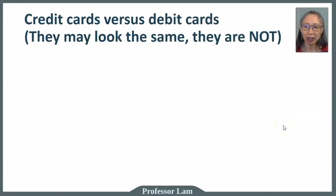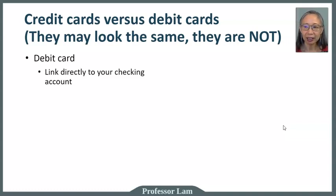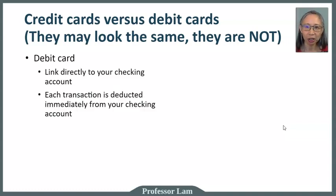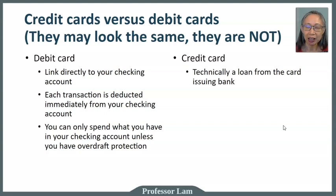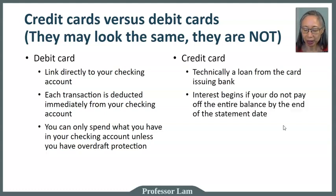Credit cards and debit cards may look the same, but they are very different. A debit card is linked directly to your checking account, and each transaction from a debit card is deducted immediately from your checking account. You can only spend what you have in your account unless you have overdraft protection. For a credit card, it is actually a loan from the card issuing bank, so interest will begin if you don't pay off the entire balance by the end of the statement date, which may or may not be the end of the month.